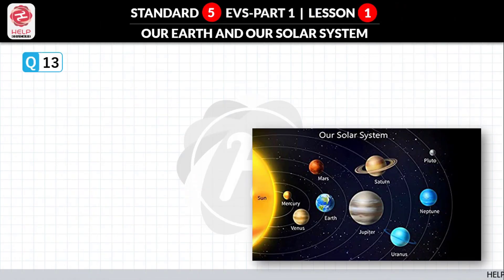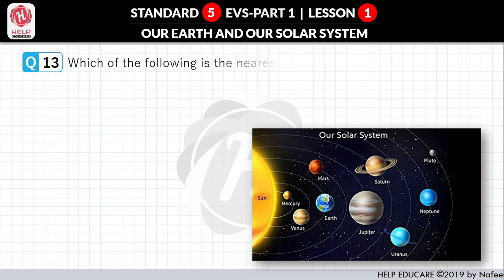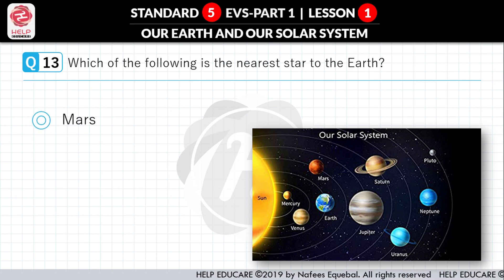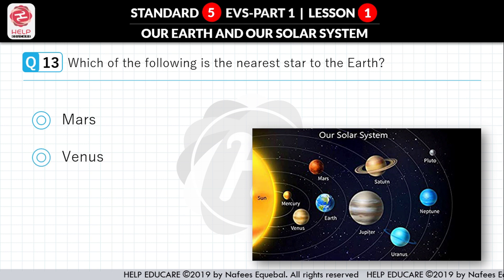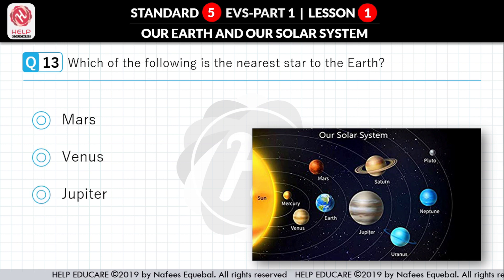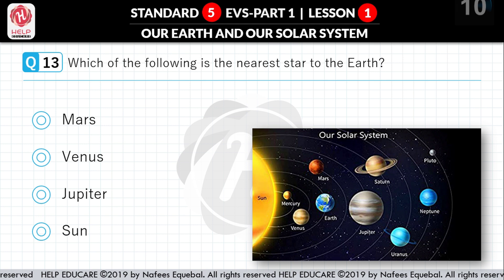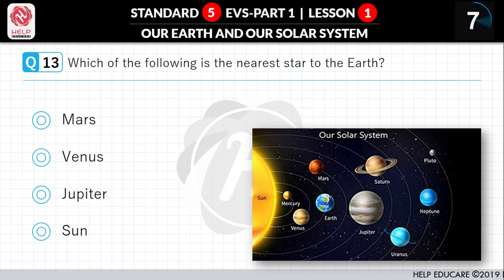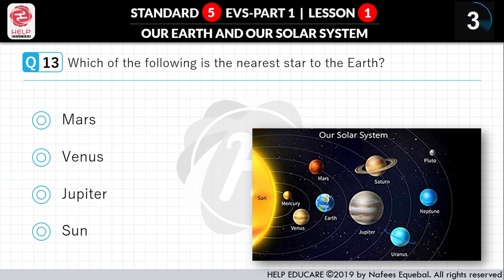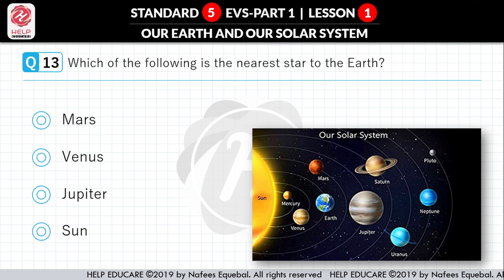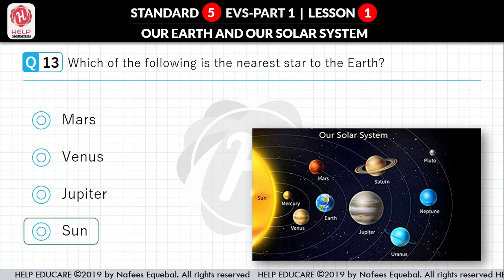Question No. 13: Which of the following is the nearest star to the Earth? First option: Mars. Second option: Venus. Third option: Jupiter. Fourth option: Sun. Correct answer is Sun.